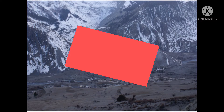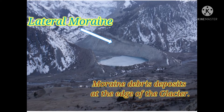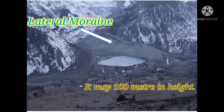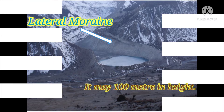Let's know about lateral moraine. When glacial debris deposits along the edge of a glacier and forms a ridge-shaped moraine, then this type of moraine is called a lateral moraine. When a glacier moves on its way, it may tear off rock and soil from both sides of its path, and this material is deposited along the edge of the glacier as lateral moraine. Lateral moraines generally have similar height and may reach up to 100 meters. Lateral moraines may be found throughout the glacial path.